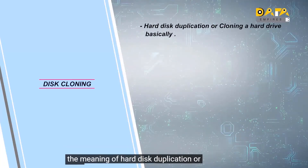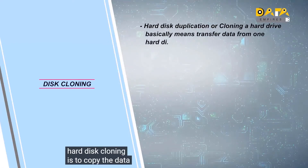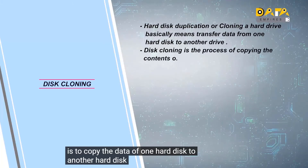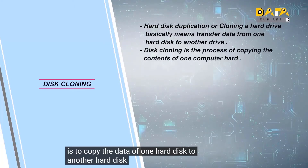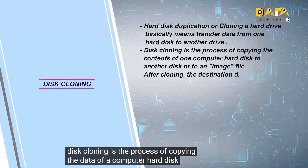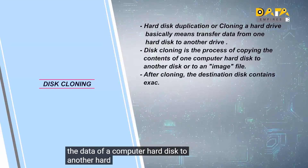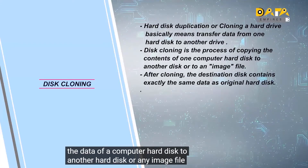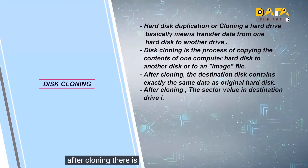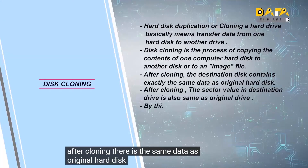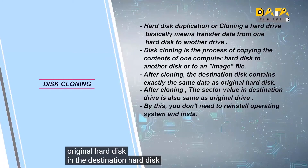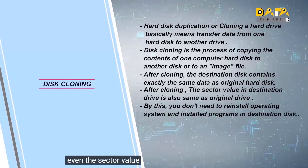The meaning of hard disk duplication or hard disk cloning is to copy the data of one hard disk to another. Disk cloning is the process of copying the data of a computer hard disk to another hard disk or any image file. After cloning, the destination hard disk has the same data as the original, even the sector values of both disks are the same.